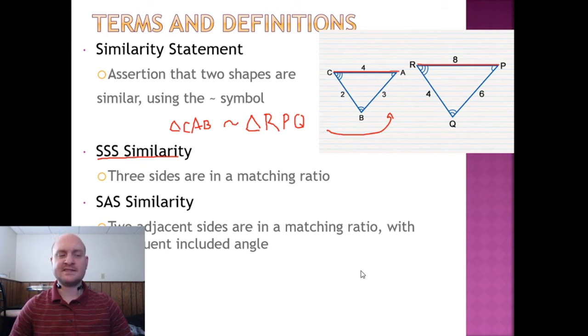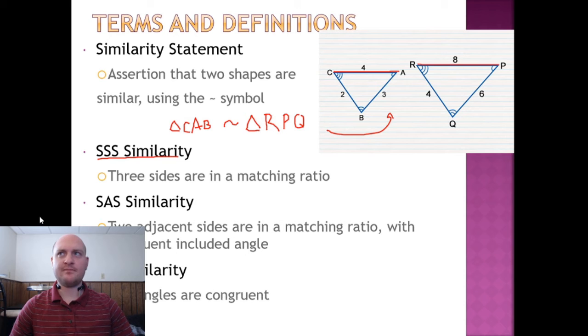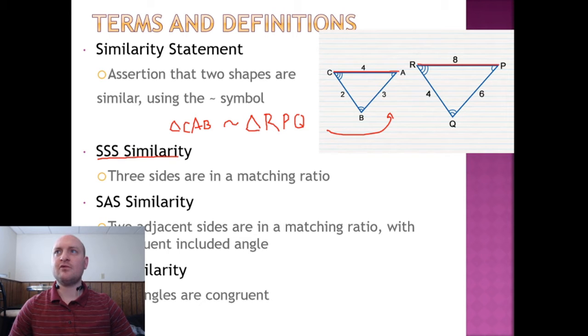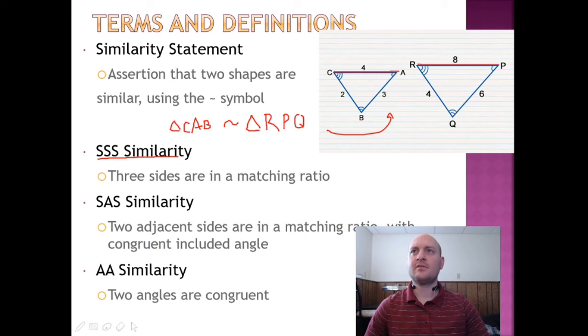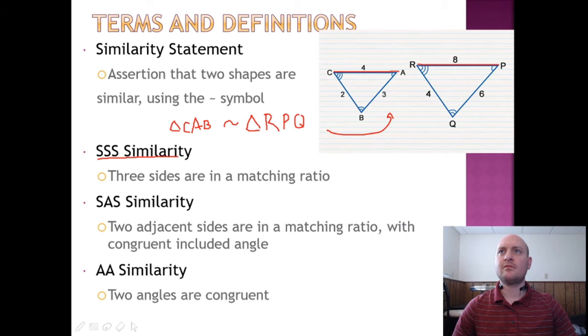The final one is just AA. And in order to see that, I have to move over here. Now, you might think two angles, that's not even enough information. Ah, but you're only trying to prove similarity. As long as the shapes are the same, the sizes can be different.